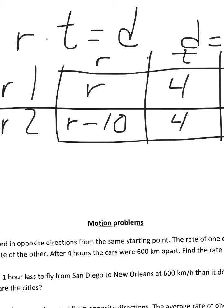Now, sometimes these distances will be equal to each other. But what we know in this particular case is that the total distance is 600 kilometers apart between them. So, in other words, the sum of those two distances, or 4R plus 4 times R minus 10, is going to be 600 kilometers.